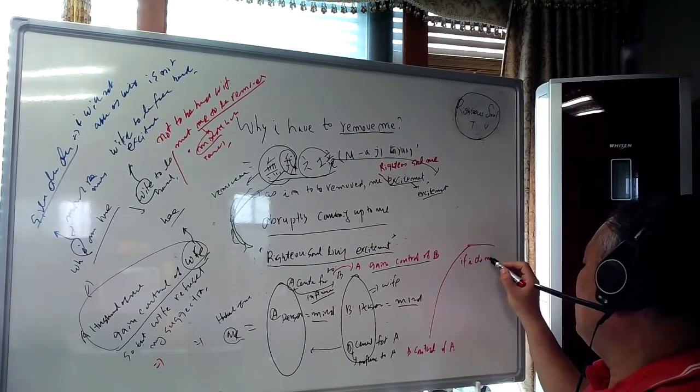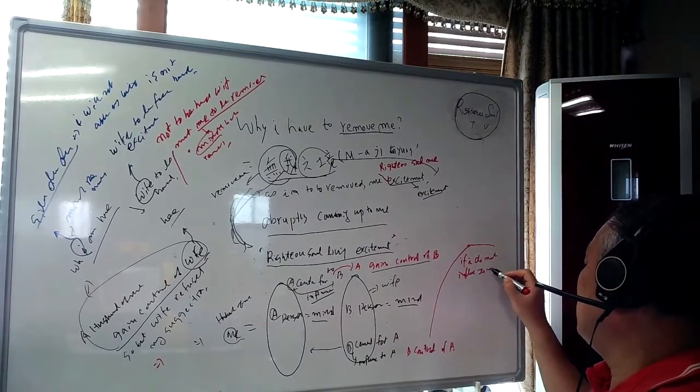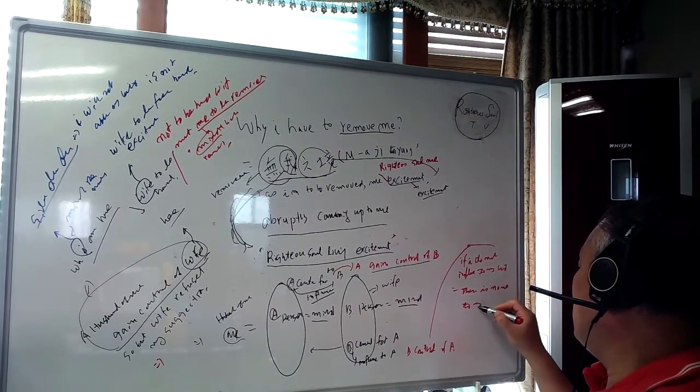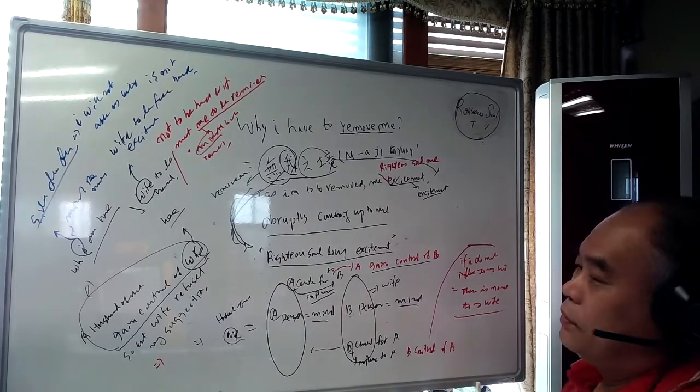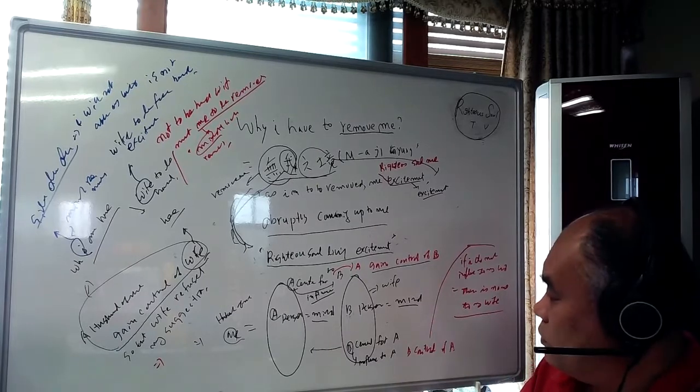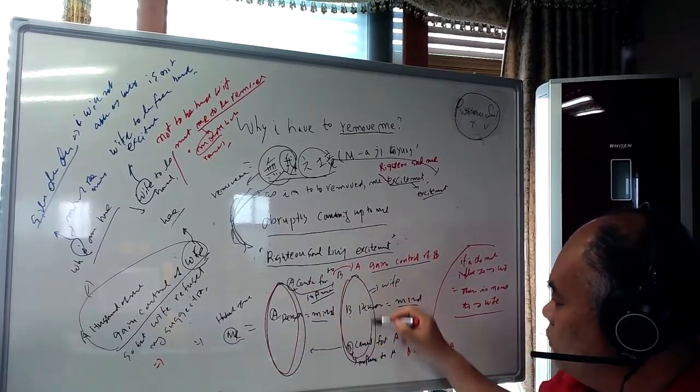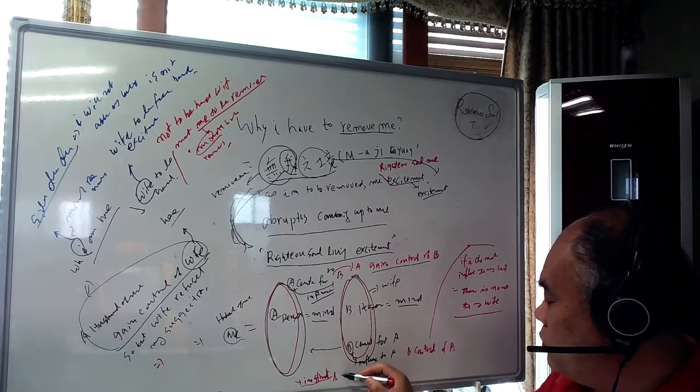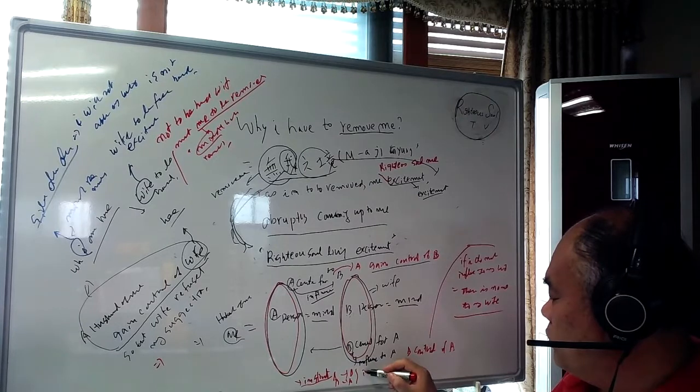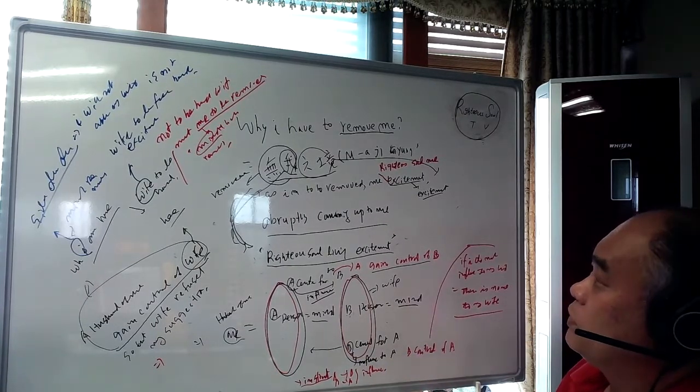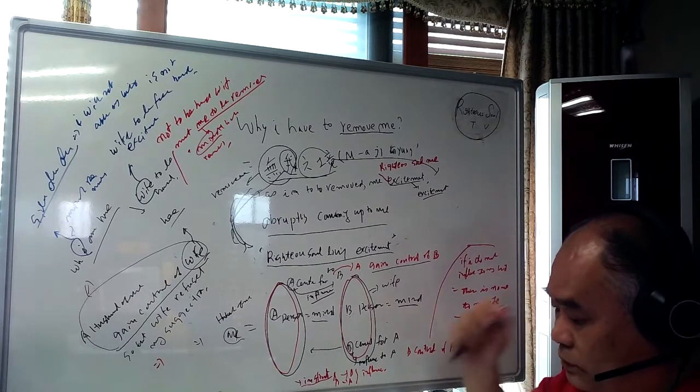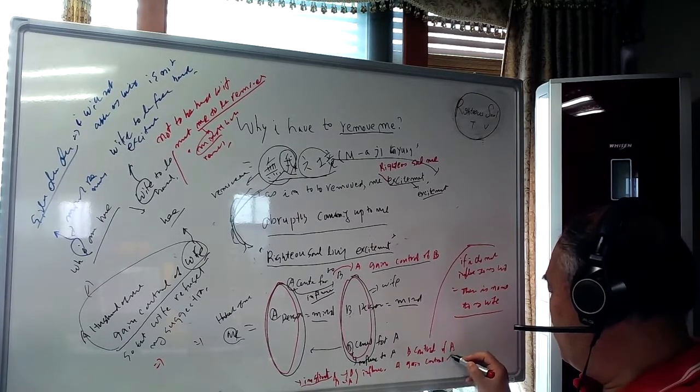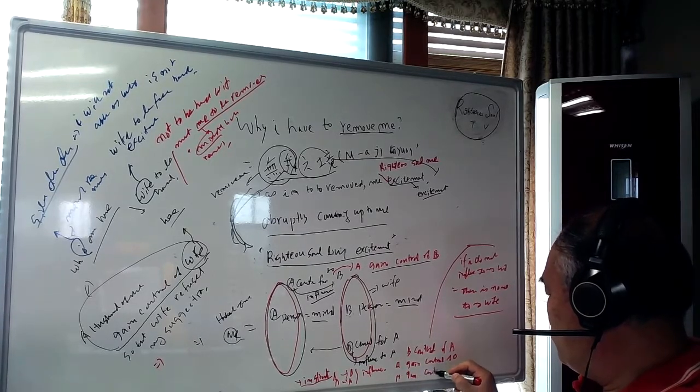If I do not influence my wife, then there is no me to my wife. Two persons always instinctively try to influence - A to B, B to A. But this influence is so much better than gain control of A or B.